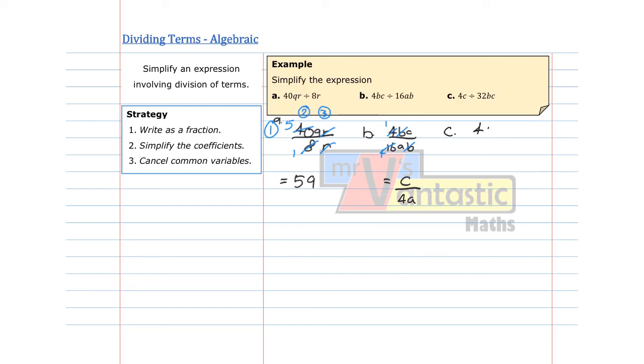Lastly, we've got 4C divided by 32BC. And again, we've got some common factors that we can cancel. Looking at my numbers, 4 and 32 both have a factor of 4. So I can reduce 4 to 1, and 32 divided by 4 is 8.